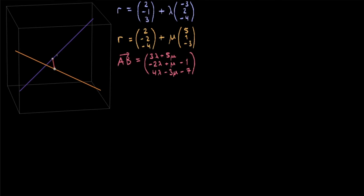Now here's the trick. These two lines make an angle of 90 degrees with this new vector A to B. So we need to use the dot product formula for finding the angle between two vectors.